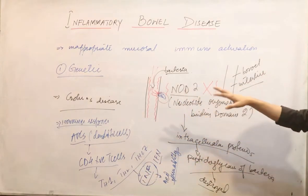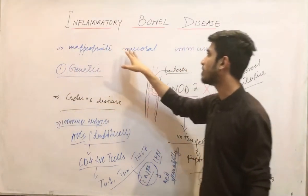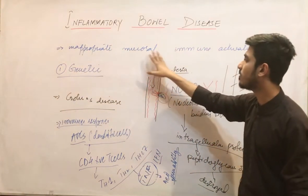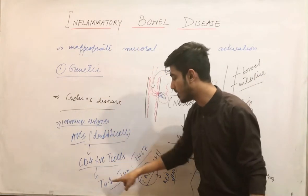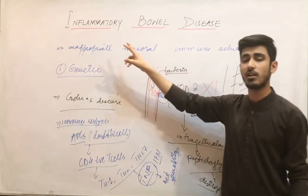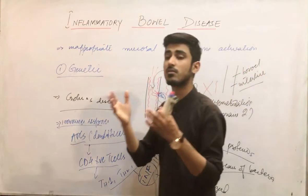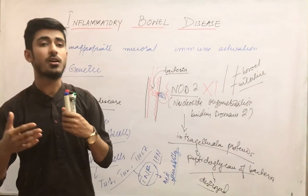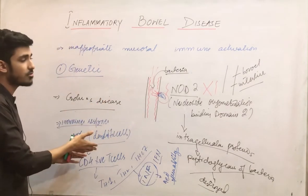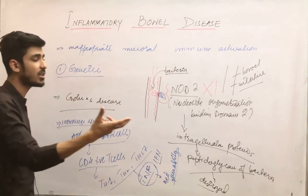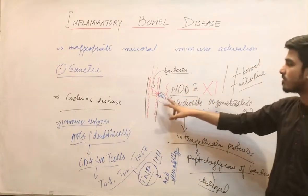This is the whole mechanism. The mucosal immune response is inappropriately activated — this activation is causing damage, causing harm to our intestine. Normally the immune system has a protective function and protects our body. But here it is causing damage because our immune system is inappropriately over-activated, resulting in damage to the intestine. In this way, Crohn's disease develops.